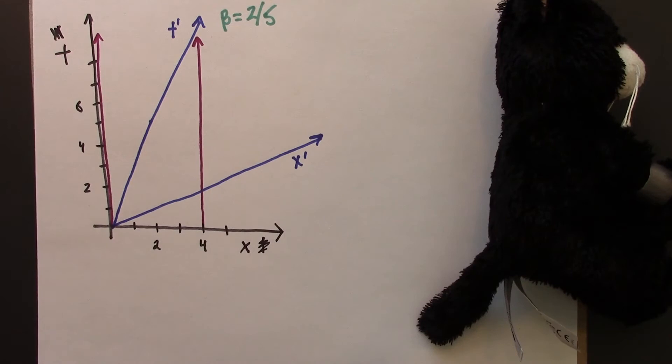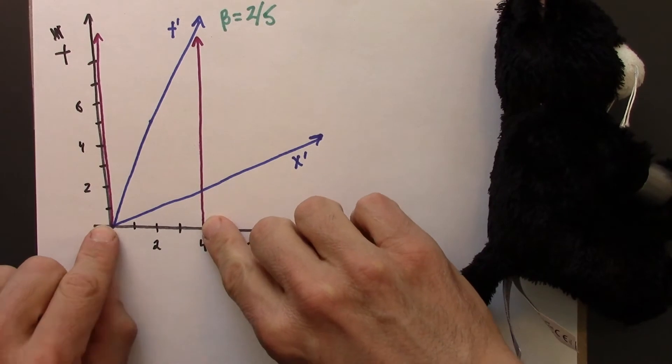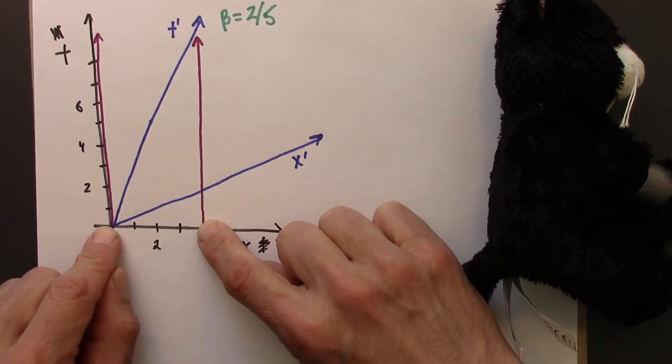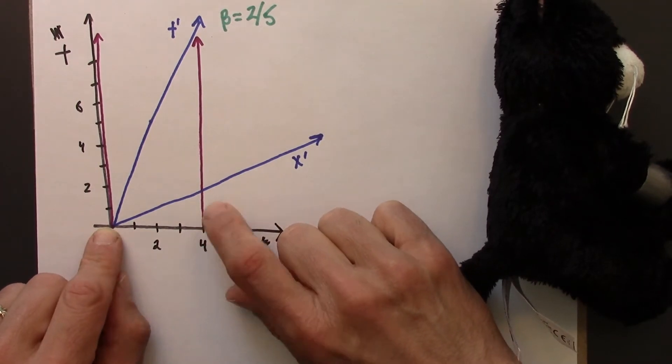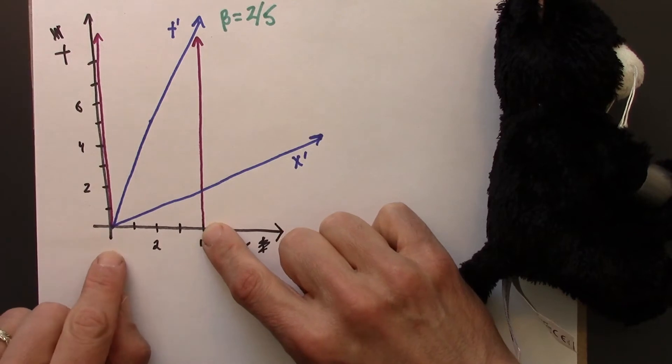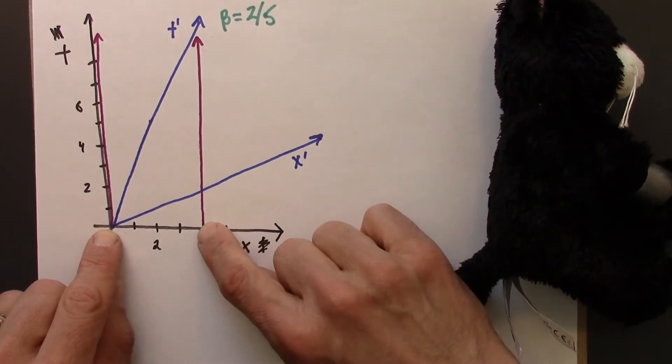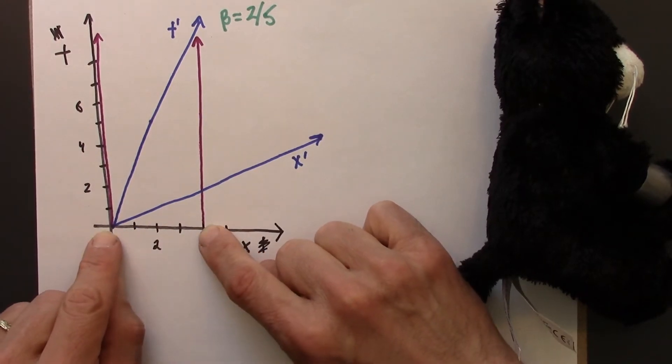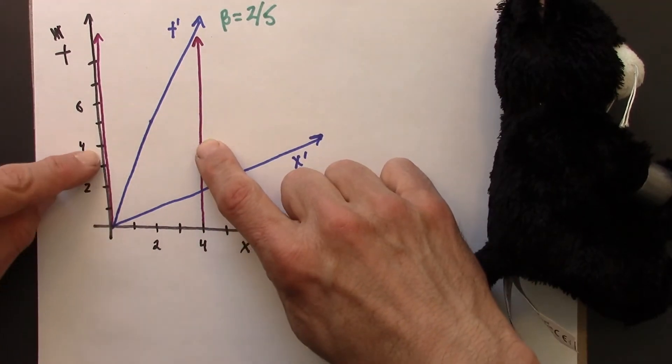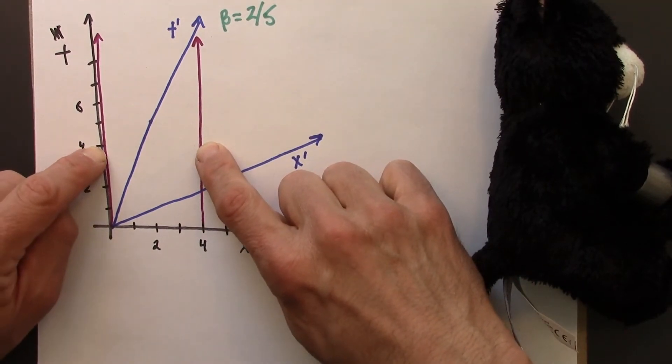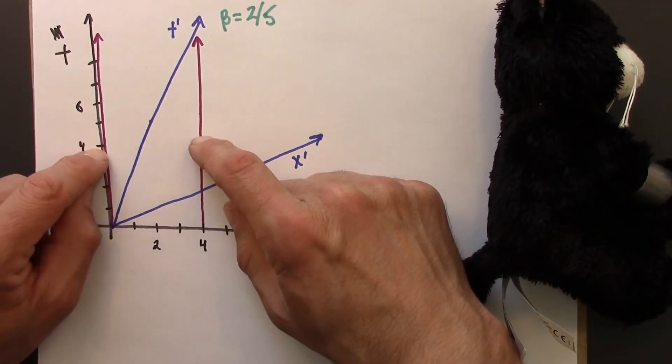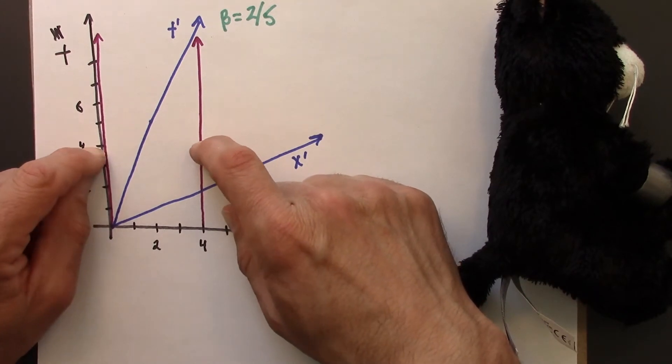Remember we said that an object's length is the distance between two events, two measurement events that occur simultaneously, one on the left end and one on the right end of the object. So here, in Ana's frame, we would have a measurement maybe here and here. That would be simultaneous. And then we would look at the delta x, and we would say, ah, that's 4. Of course, we could do that over here, too, maybe at t equals 4 seconds. We could do a measurement, simultaneous, according to Ana. And we would have an x of 0, an x of 4, and we would conclude that the stick has a length of 4.